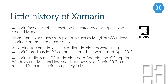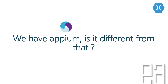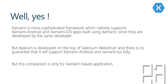Xamarin Studio was the IDE to develop both Android and iOS apps for Windows and Mac until last year, but now Visual Studio 2017 has replaced Xamarin Studio completely, even on Mac. Visual Studio 2017 Community edition also has Xamarin, so you can try it out yourself. Now, is Xamarin different from Appium? Yes — Xamarin is a more sophisticated framework which natively supports Android and iOS apps built using Xamarin, since it was developed by the same developers who built the framework. Appium is developed on top of Selenium WebDriver and there is no guarantee it will fully support Xamarin.